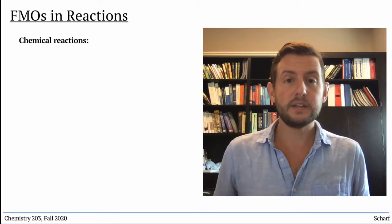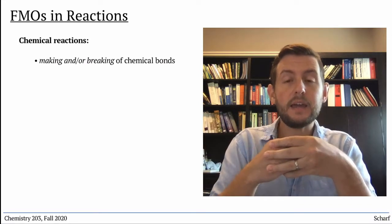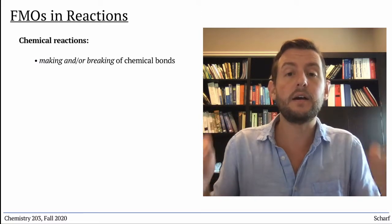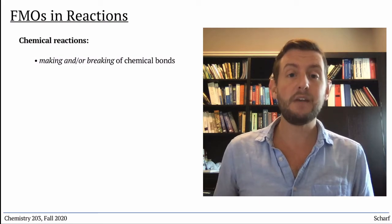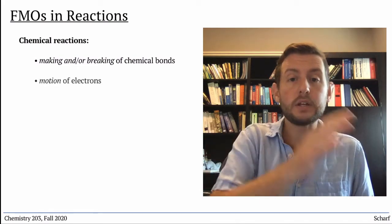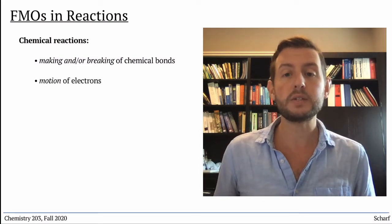Chemical reactions involve the making and or breaking of chemical bonds. And since bonds are made of electrons, every reaction involves the motion of electrons from one place to another.